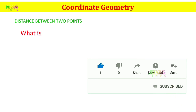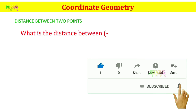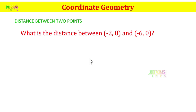What is the distance between the points (-2, 0) and (-6, 0)? Here, (-2, 0) and (-6, 0) are our two points. We have to find the distance between them.